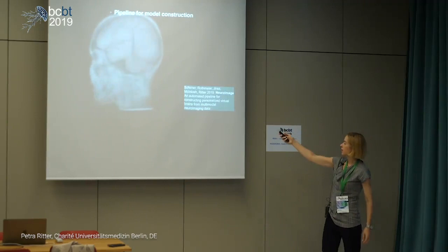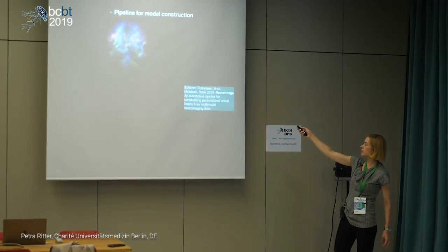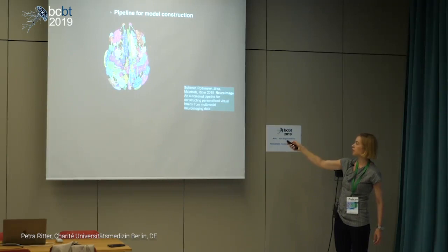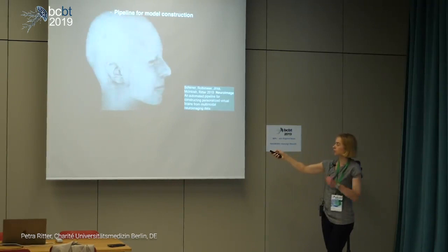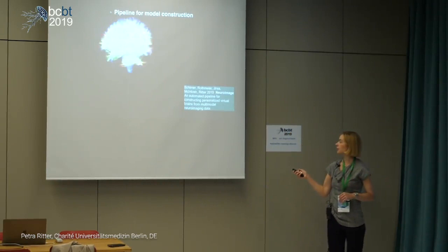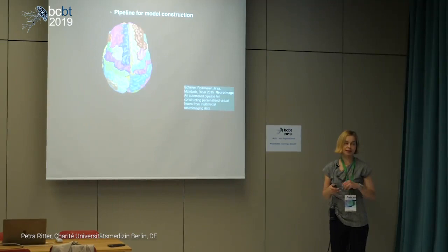We reconstruct from magnetic resonance imaging data the surfaces of the skull and the cortex. We reconstruct the nerve fibers, and then we can use different parcellation schemes using different modalities or anatomical landmarks to parcellate the brain into different regions. Each region is represented by a population model, and they interact through this individual anatomical skeleton, so each population generates activity.